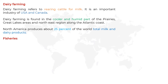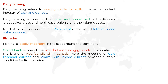Next is fisheries. Fishing is locally important in the seas around the continent and is also an important occupation. Grand Bank is one of the world's best fishing grounds. It is located in the island of Newfoundland in Canada. Here, the meeting of the cold Labrador current and the warm Gulf Stream current provides a suitable condition for fish to thrive.